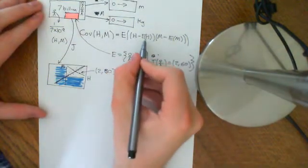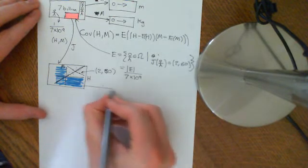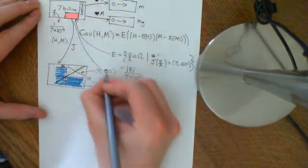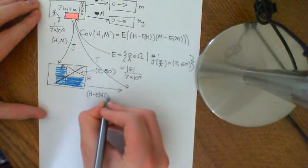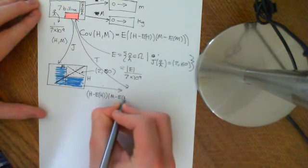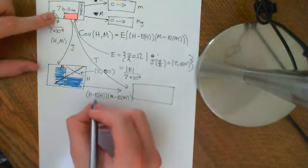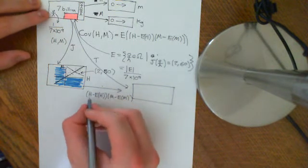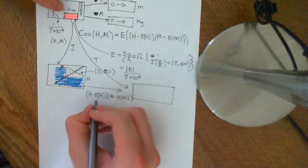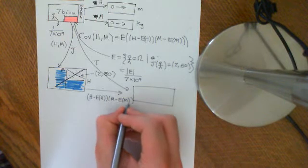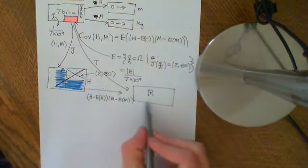Let's define a new random variable T, which takes H minus the expected value of H and multiplies it by M minus the expected value of M. What that's going to do is ascribe every person a real number: it takes their height, subtracts off the mean height of the entire population — telling you whether you're above or below average in height — and multiplies that by whether you're above or below average in mass. The covariance is the expected value of this random variable T.